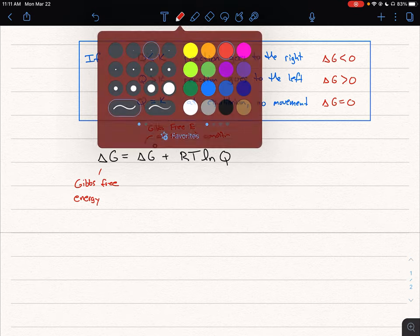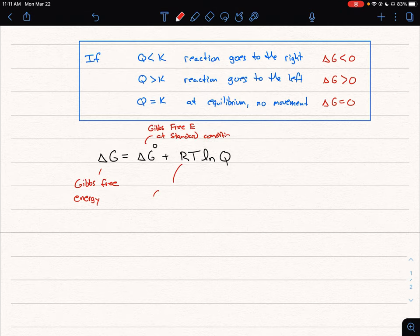And in this expression, R is our gas constant. Now we have to watch out for units here because this gas constant will be 8.314 joules per mole times Kelvin.